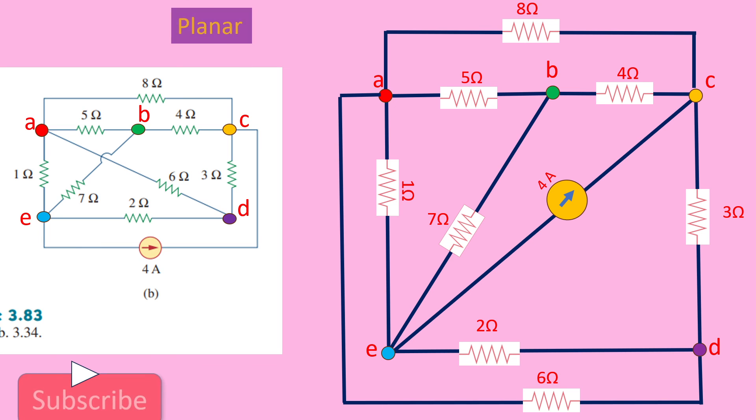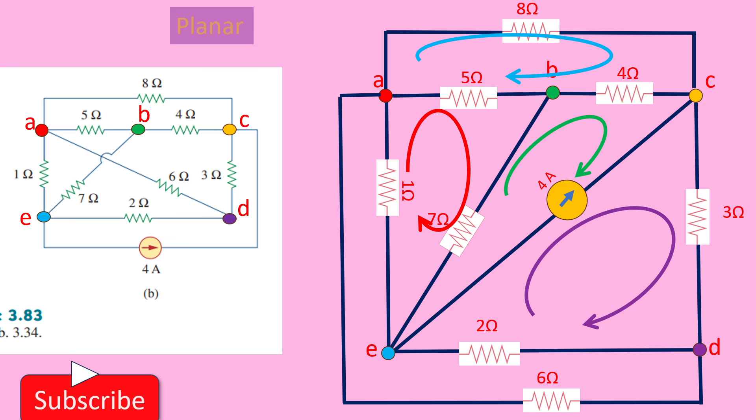Anyhow, we'll check whether we can form the loops, individual loops. So this is loop one. This is loop two. Here we formed loop three.